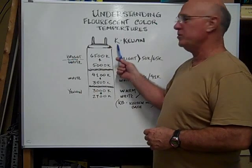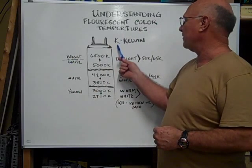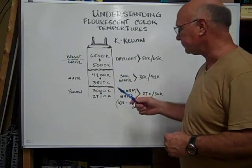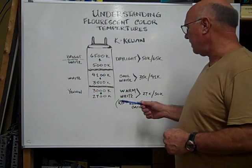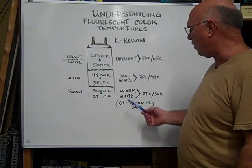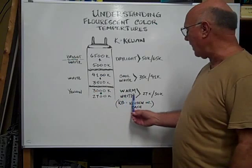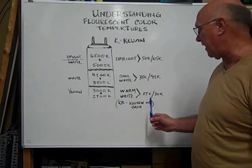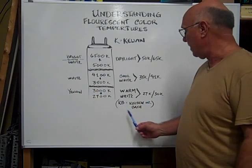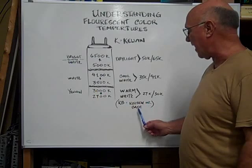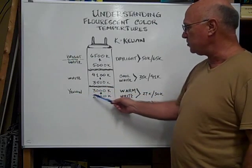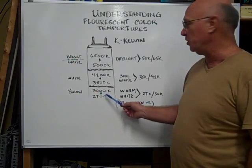The K on your fluorescent bulb indicates the Kelvin scale. The difference starts at the lower end of the spectrum, which is warm white, indicated by 27K or 30K. If your bulb has KB on the bulb, that indicates kitchen or bath, which is a warm white. And that's going to be in a yellowish color when you get it turned on.